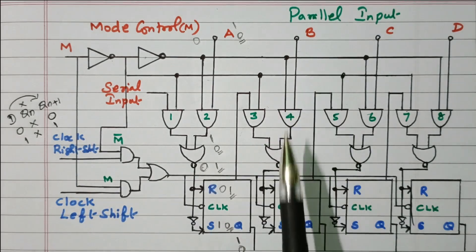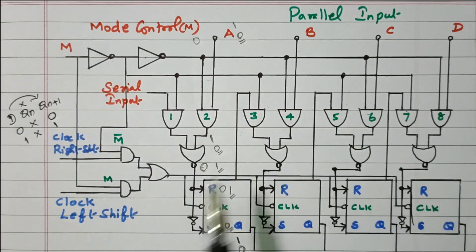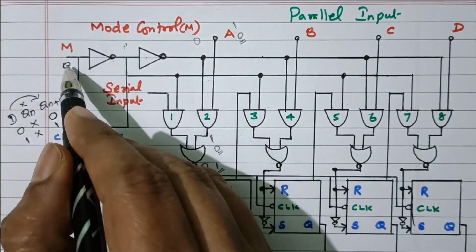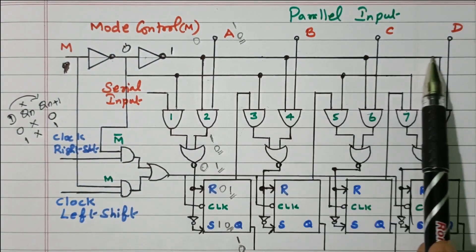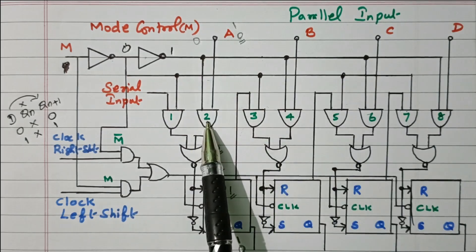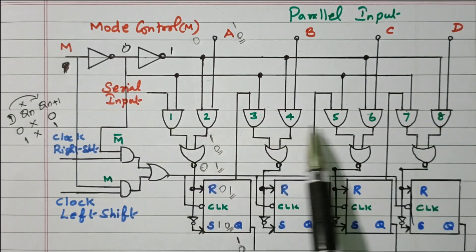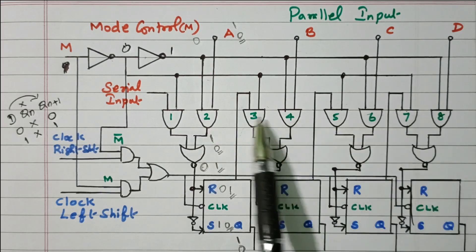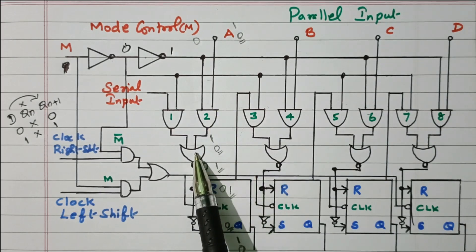We need to see three operations: parallel loading, serial input shifting left side, and serial input shifting right side. If M equals 1, after the NOT gate it becomes 0, so the upper line is activated. AND gates 2, 4, 6, and 8 are activated; AND gates 1, 3, 5, 7 are deactivated because one input is 0. In gates 2, 4, 6, 8, the data inputs A, B, C, D are connected. This data goes through the NOR gate to the flip-flop — this is called parallel loading.